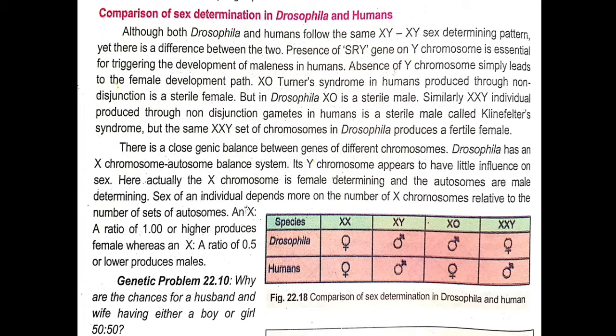Similarly, an XXY individual produced through non-disjunction of gametes in humans is a sterile male, called Klinefelter's syndrome. If one extra sex chromosome is added — so three sex chromosomes (XXY) are present — in humans a sterile male is produced who lacks typical male characteristics. This syndrome is called Klinefelter's syndrome.